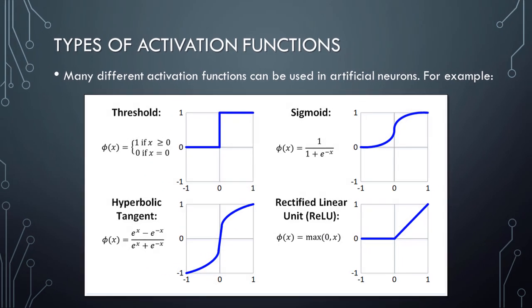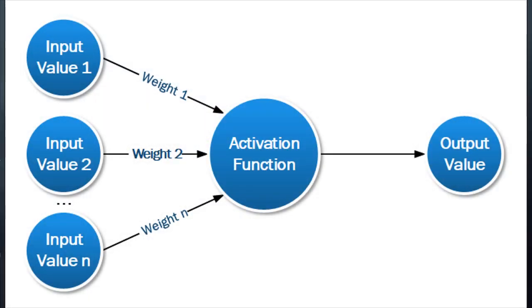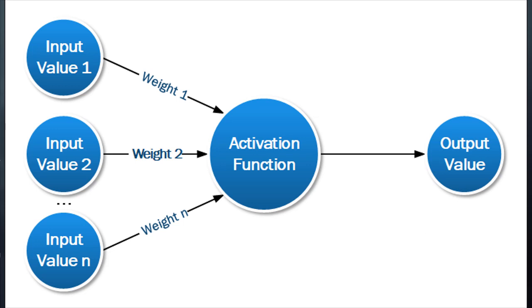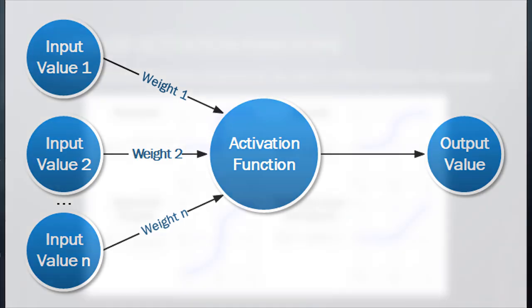Before proceeding, let's revisit our artificial neuron diagram to be sure we understand the big picture. The basic process is that the sum of the weighted input values is passed into an activation function, which yields an output value. The nature of the output depends on the specific activation function being used — for example, the sigmoid function always yields a value between 0 and 1. Note the important role of the weights: since the values of the weights directly affect the input value, the weights also affect the output value. This idea will be important when we learn about how weight values are adjusted.